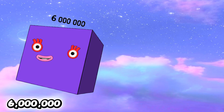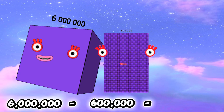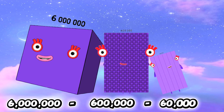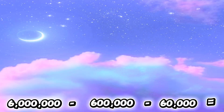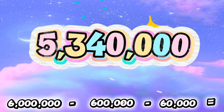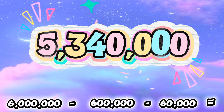6,000,000 minus 600,000 minus 60,000 is equals to 5,340,000.